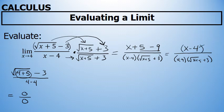What's going to happen here is that the quantities of x minus 4 will be able to be divided away, and I'm left with the limit as x approaches 4 of 1 over the square root of x plus 5 plus 3.